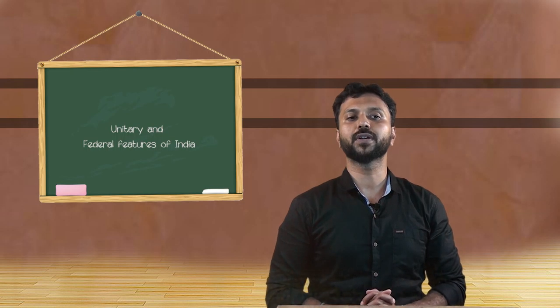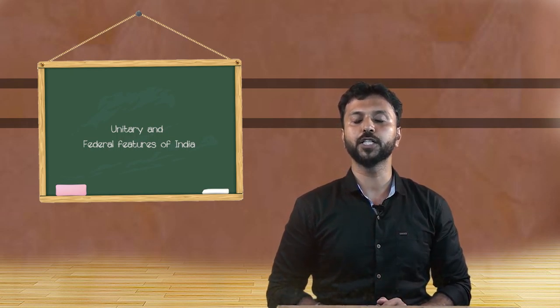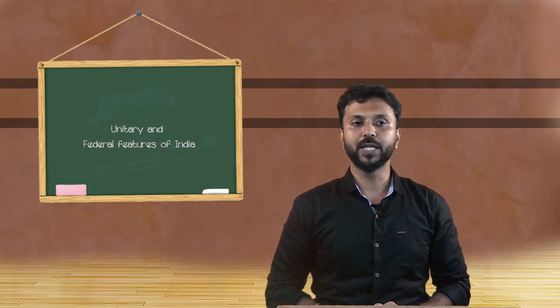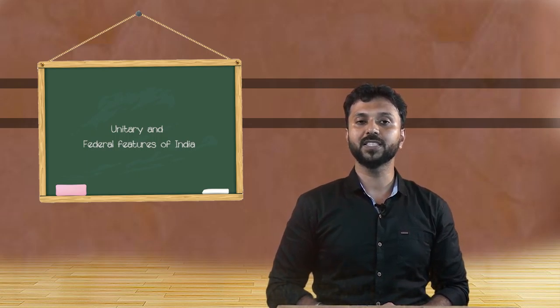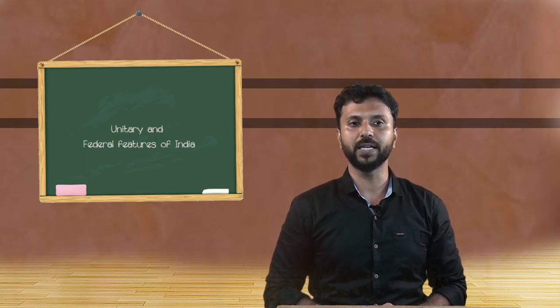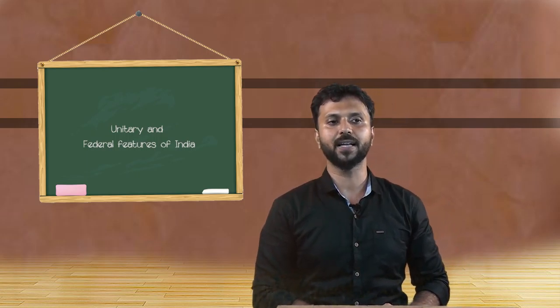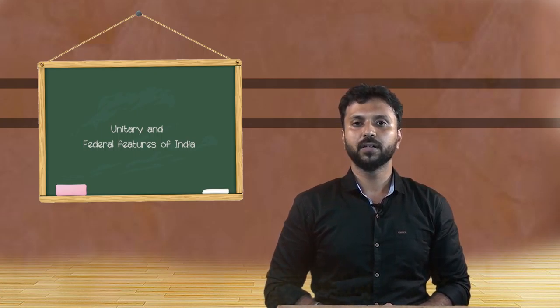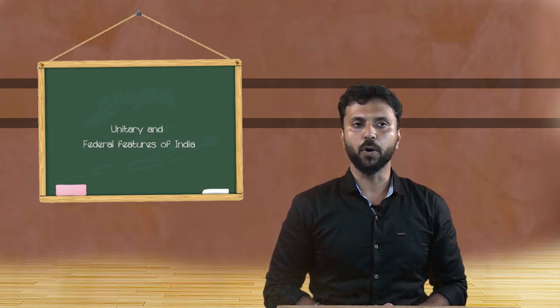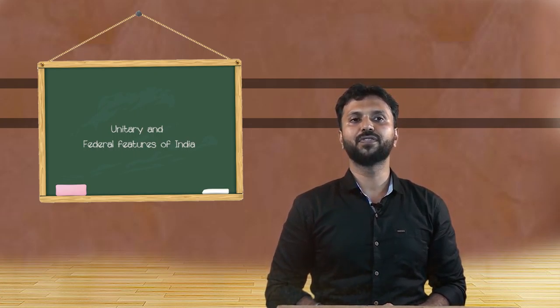J.N. Joshi writes the union is not strictly a federal polity but a quasi-federal polity with some vital and important elements of unitarian government.